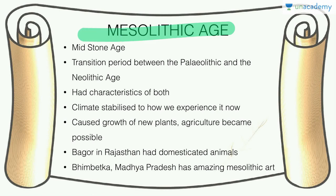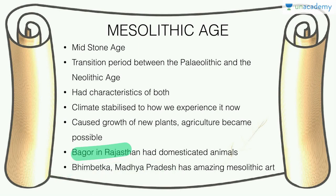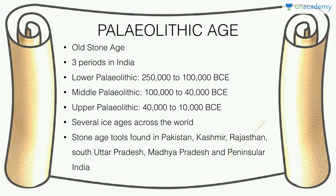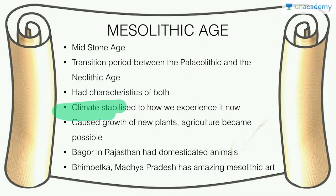The Mesolithic period is most important for its art. Bhimbetka in Madhya Pradesh is a key site — do look it up. Bhagaur in Rajasthan had domesticated animals at this point. This Mesolithic period had features of both Paleolithic and Neolithic times. It had Paleolithic-type tools as well as the Neolithic characteristic of domestication of plants and animals. This began because the climate stabilized and grew warmer after the many ice ages of the Paleolithic, leading to diversification of biology and ecology.